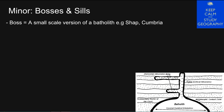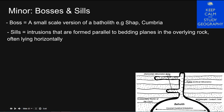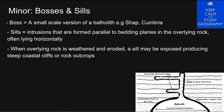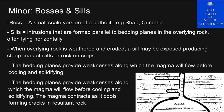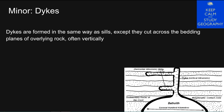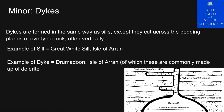Bosses and sills. A boss is a small scale version of a batholith — an example is its shape in Cumbria. Sills are intrusions formed parallel to bedding planes in the overlying rock, often lying horizontally. When overlying rock is weathered and eroded, a sill may be exposed, producing steep coastal cliffs or rock outcrops. The bedding planes provide weaknesses along which the magma will flow before cooling and solidifying. As the magma contracts as it cools, it forms cracks in the resultant rock. Dikes are formed in the same way as sills, except they cut across the bedding planes of overlying rock, often vertically. An example of a sill is the Great Whin Sill in the Isle of Arran; an example of a dike is Drumadoon in the Isle of Arran. Both are commonly made of a material called dolerite.